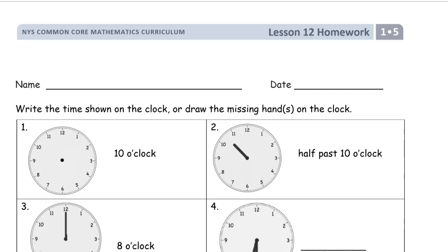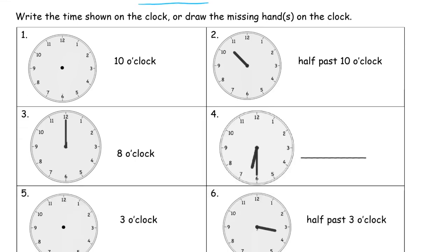Welcome to the homework for lesson 12. This is module 5 of first grade. Write your name here first. We'll be writing down the time shown on the clock or drawing the missing hands on the clock. Different boxes have different things, so we just do what is missing.